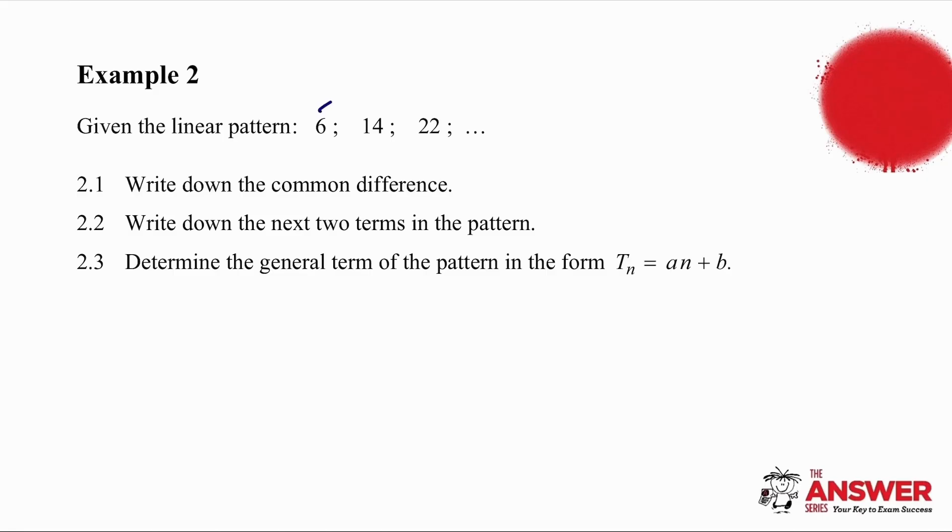Okay, so what do we know? If we take 6 and 14, the difference is 8. If we take 14 and 22, the difference is still 8. So we have a common difference of 8. We can easily generate the next two terms because we're simply adding on 8 each time. So we are going to get 30 and 38.